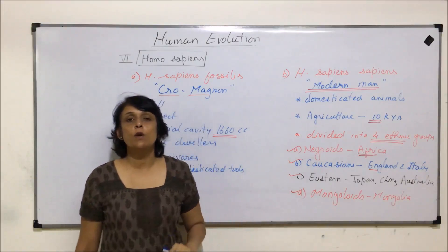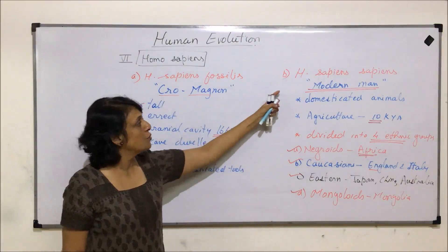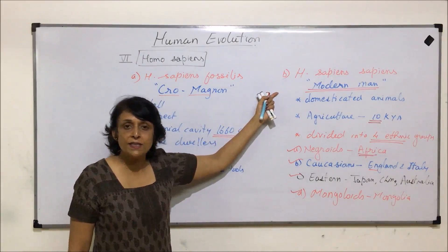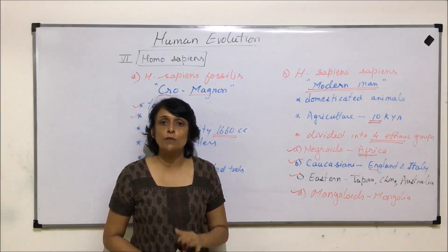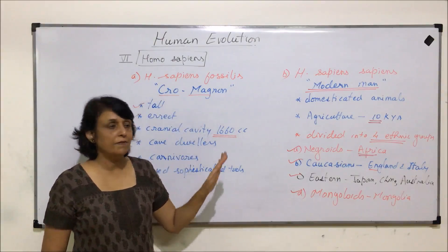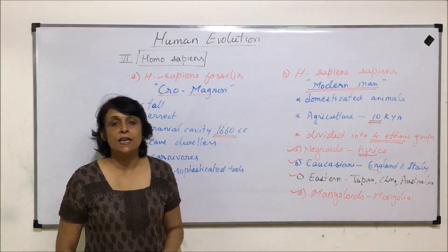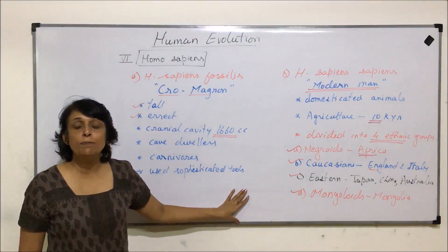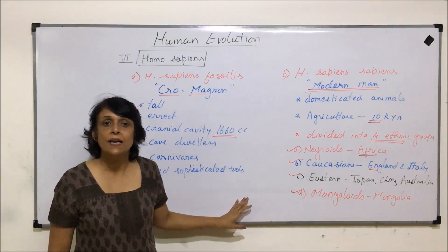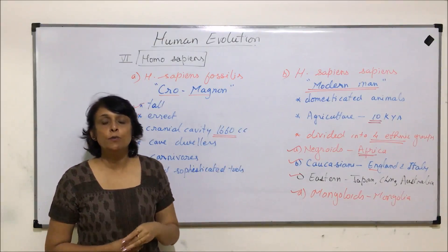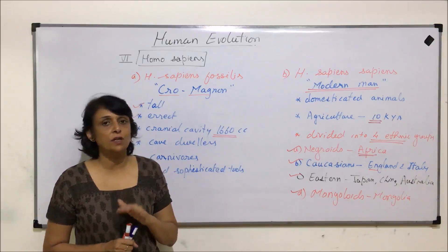This is what we know about the evolution of human beings, starting from Dryopithecus to Homo sapiens sapiens. All the information is based on the fossils that have been found, and the key points covered are those on which exam questions have been most frequently asked. With this, the chapter of human evolution and the complete evolution unit is now complete.